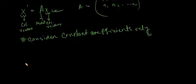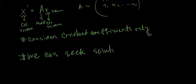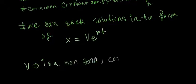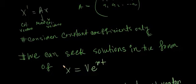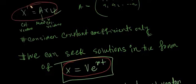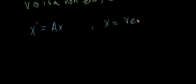Since we are considering homogeneous differential equations with constant coefficients, we can make an analogy with differential equations we solved before and seek solutions in the form of capital X equals V times e to the power rt, where V is a non-zero constant column vector. If you use this definition of X and combine it with the system of equations you are trying to solve, you will get the following interpretation of r.